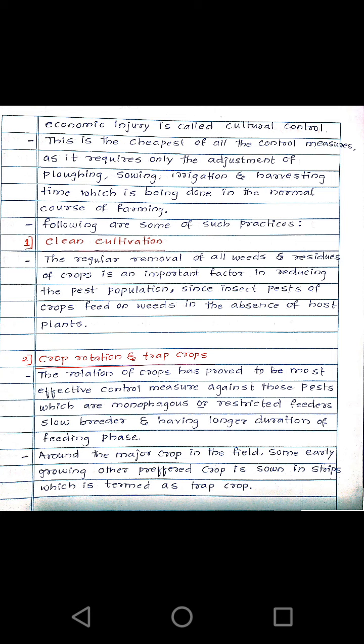The first practice is clean cultivation. During cultivation, the fields should be kept clean. The regular removal of all weeds and residues of crops is an important factor in reducing pest populations, since insect pests feed on weeds in the absence of host plants.